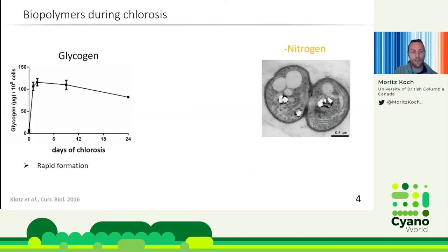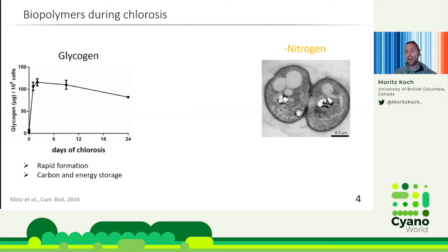One of the most remarkable things is that cells accumulate large quantities of biopolymers, one of them being glycogen. The glycogen accumulation starts very rapidly after the onset of nitrogen starvation, and then after the first few days the cells slowly degrade it over time — likely because glycogen serves as the main carbon and energy storage during starvation.